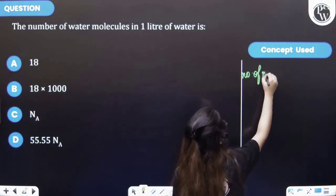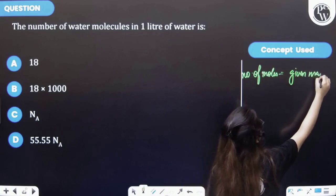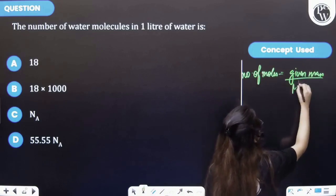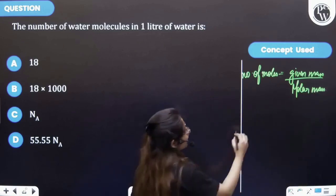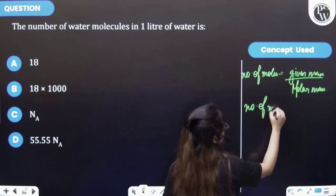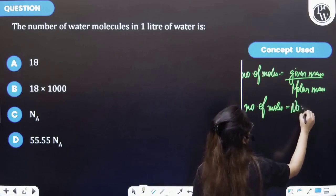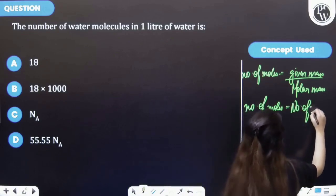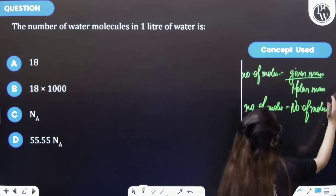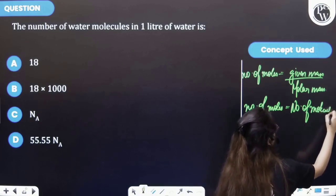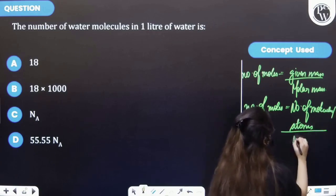Number of moles is equal to given mass upon molar mass. Also, we know that number of moles is equal to number of molecules, or it may be atoms as well, upon Avogadro's number.